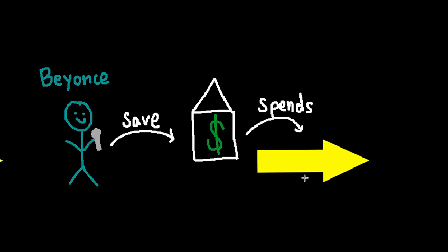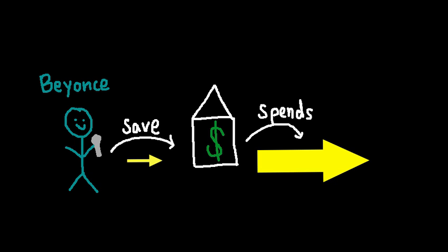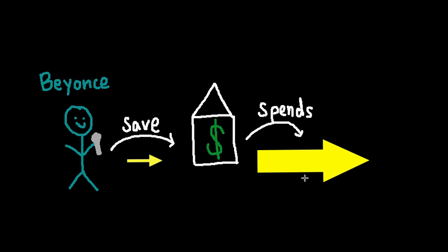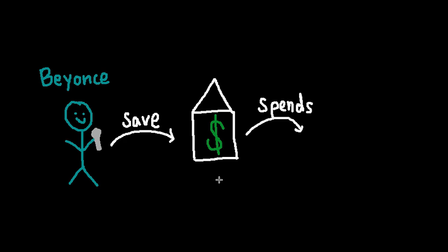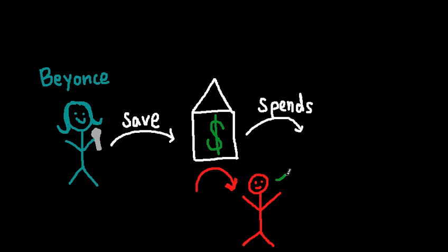Her daughter Blue Ivy is getting older and likes more clothes and toys. Beyonce also wants to travel with Blue Ivy, so she spends more on vacations. Little by little, if she makes big purchases, her spending will outweigh her savings and the money in the bank will start to decrease. Or in another scenario, let's say the bank got robbed — pretending there are no government protections and she can't get that money back. If she's earning the same amount, the money in the bank will still start to decrease.